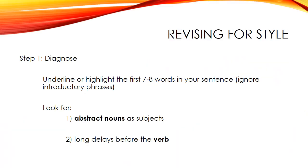Now that we've covered the principles of active, stylish writing, let's talk about how to revise your own work to make it more active, clear, and direct. The first step is to diagnose the problem — find the issues in your writing. Look through a piece of writing, and for each sentence, underline or highlight the first seven to eight words of the main clause, ignoring any introductory phrases. Look for abstract nouns serving as subjects — usually nominalizations — and look for long delays before the verb, where there are many words before you reach the main verb.